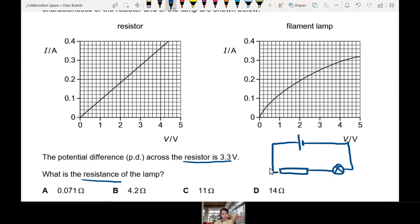Okay, so potential difference across the resistor is 3.3 volts. That is a clue. I have to start with that. The only clue I have is the graph. So let's try to look at the graph.